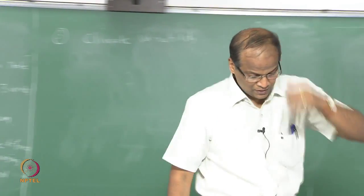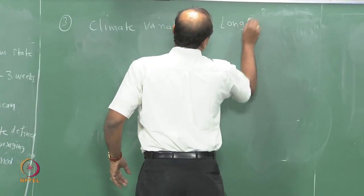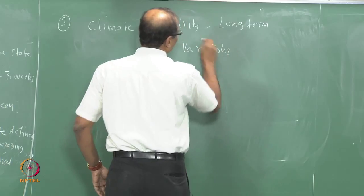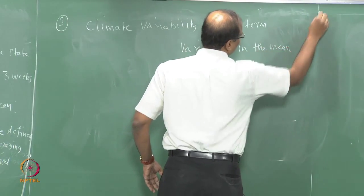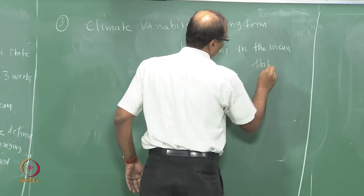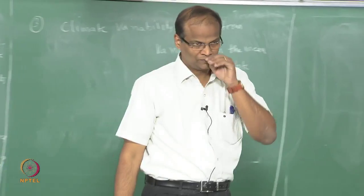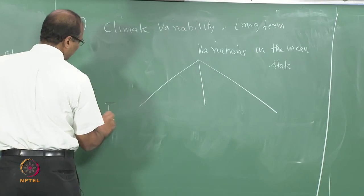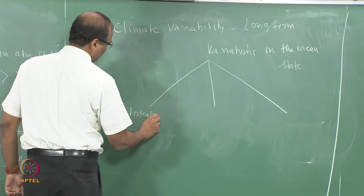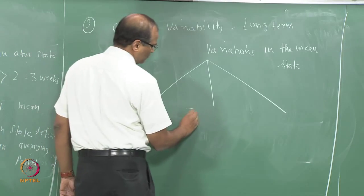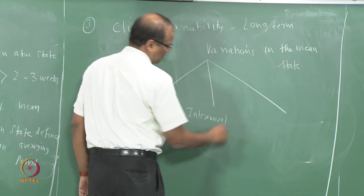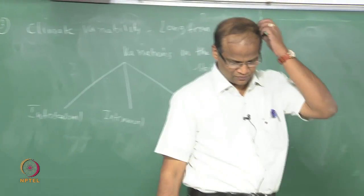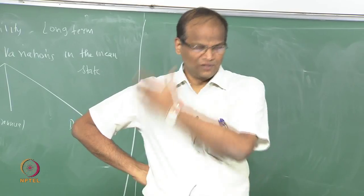Climate variability is long-term variation. This can be inter-seasonal, inter-annual, decadal, or of that order — century scale climate and all that.